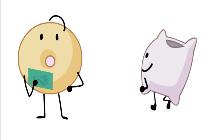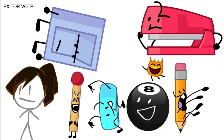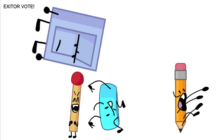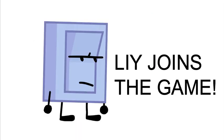The Exitors are here. I will call the name of the Exitor I think won't come back. Roboty, David, Eightball, Firey Jr., Dora, Stapy, Match, Bracelety, Pencil. Liy joins the game.